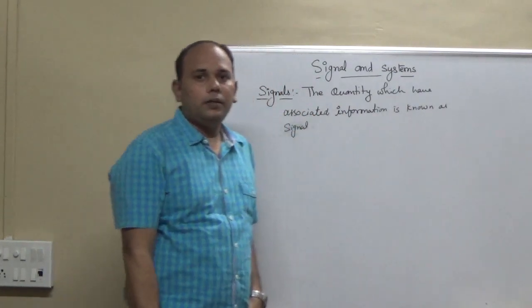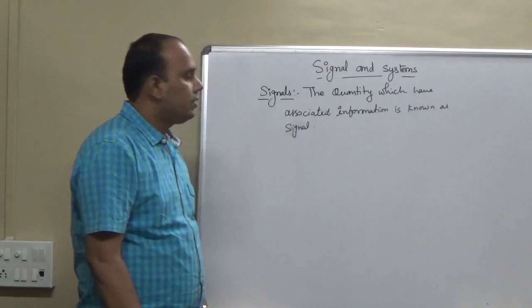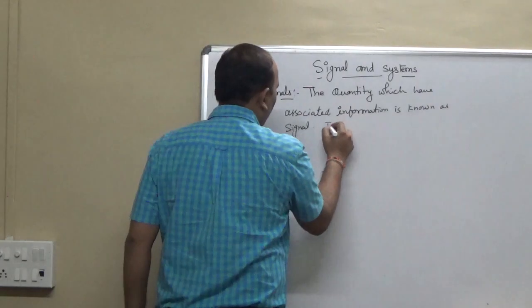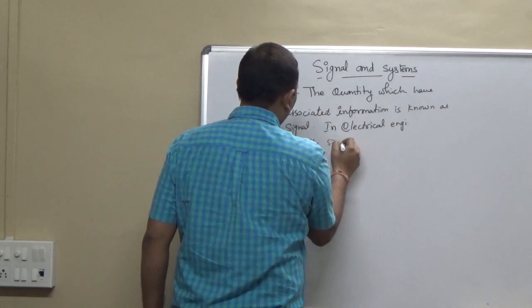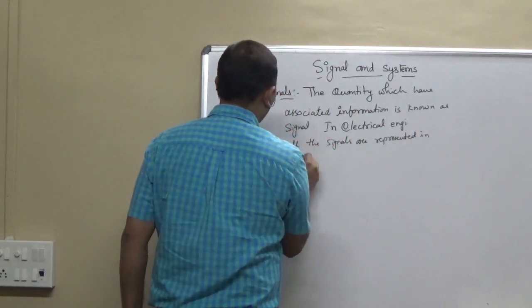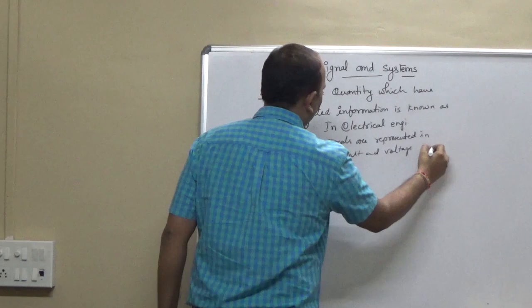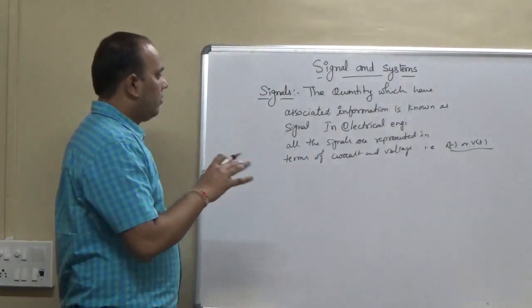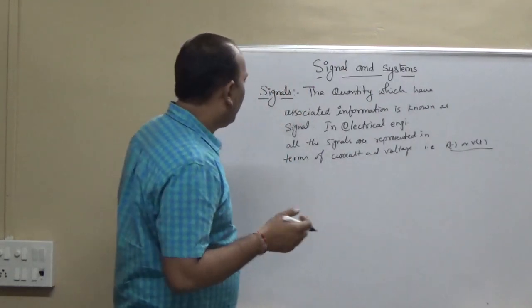In electrical engineering, signals are normally in the form of current or voltage. All the signals are represented in terms of current and voltage — that is I or V — which is current with respect to time or voltage with respect to time. That is a function, and that function is a signal represented as a function of time, voltage, and current.